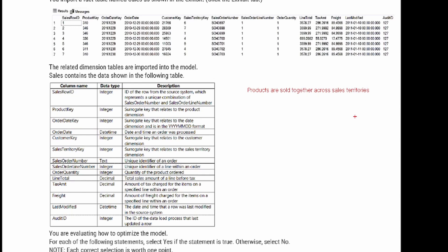With that goal in mind, we have to identify what's going to be important here for performing this basket analysis. Looking at sales row ID, it's just labeling the row — one, two, three, and so on — so that's not necessarily important. But we are dealing with products, so the product key is going to be important here. We also see the sales territory key as well.